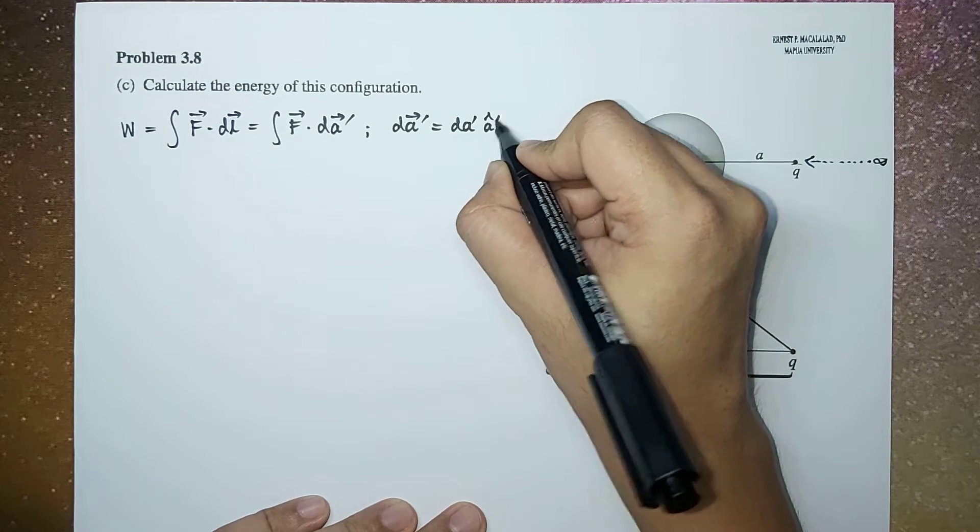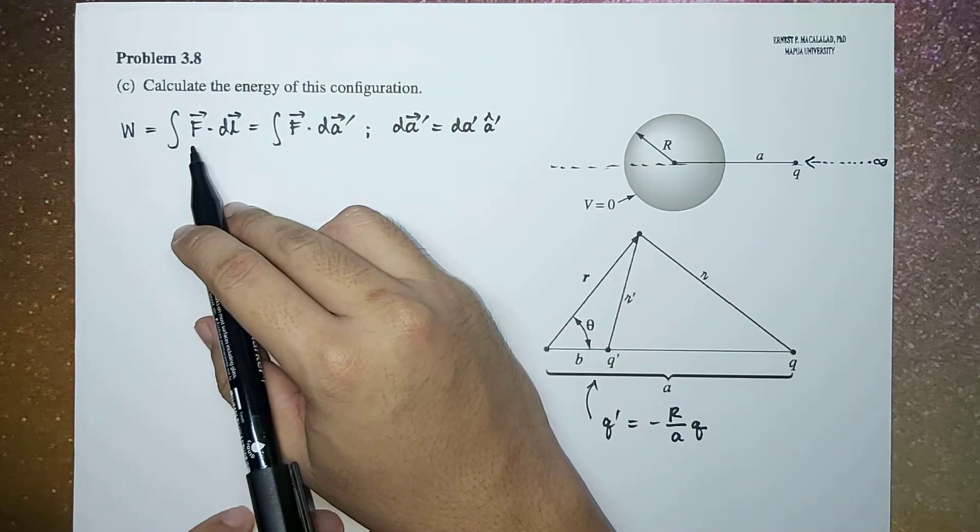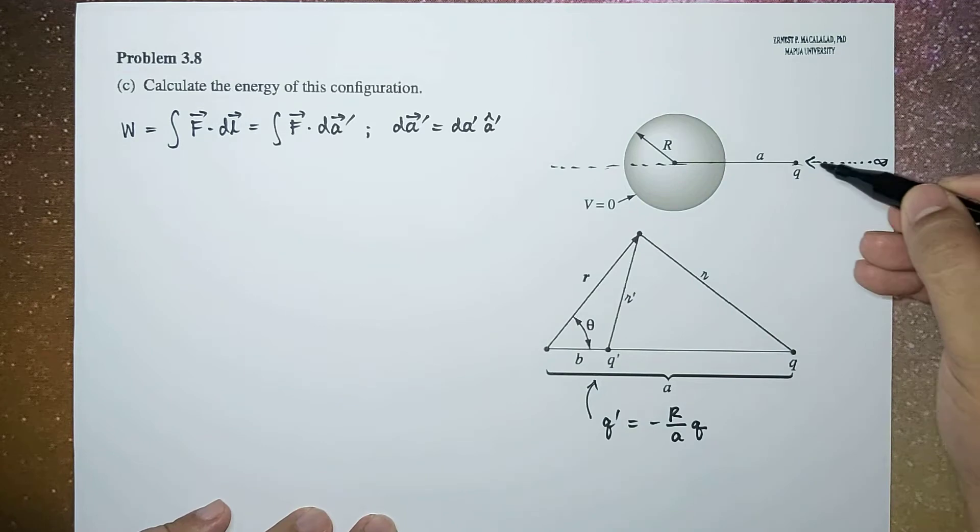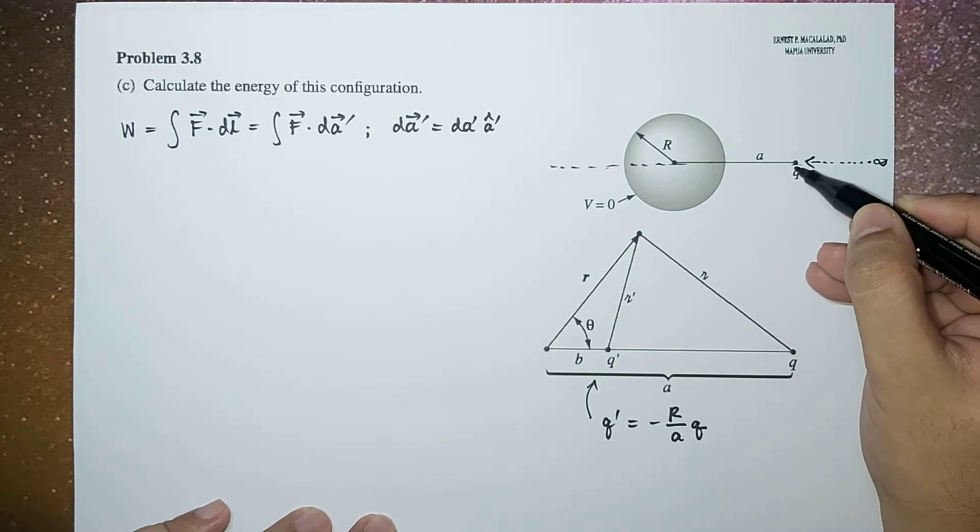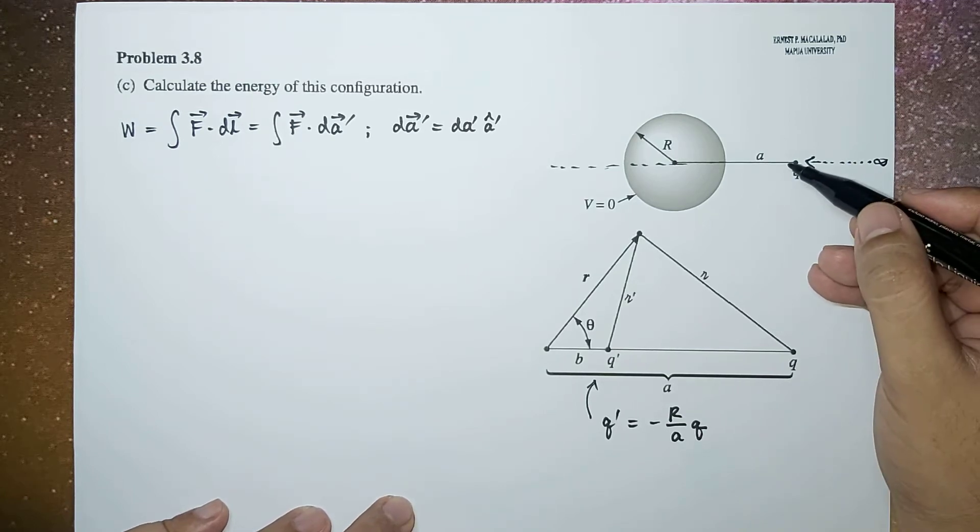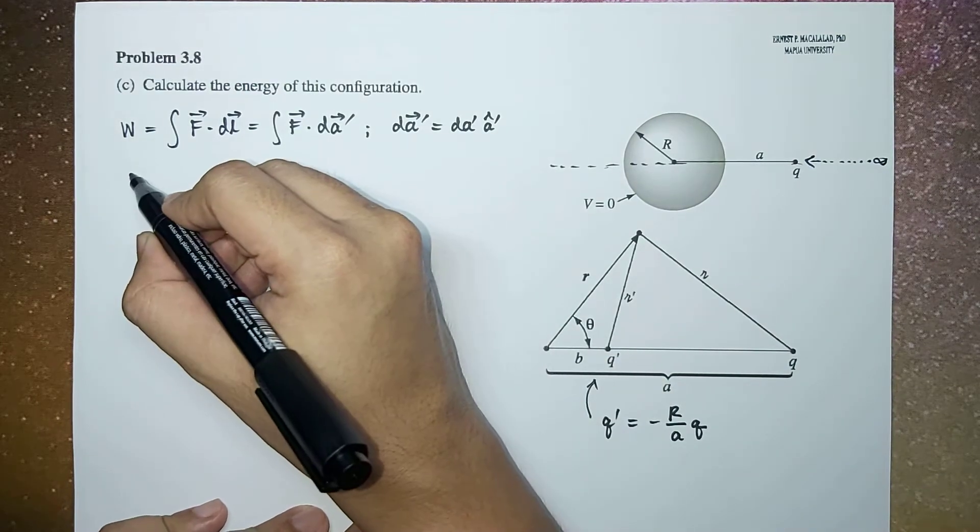Now this F is the force that we exert on q as we place it at this point, and that will be equal to the negative of the force between q prime and q.